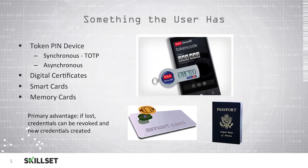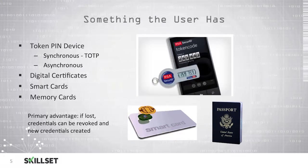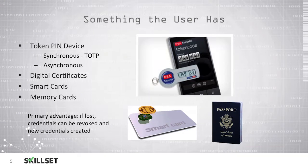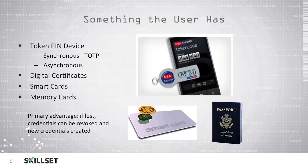Smart cards and memory cards are also ways to identify a user, as devices they can carry around with them. The main difference between a smart card and a memory card is that a smart card contains a microprocessor able to process information and perform tasks, while the memory card simply stores information. The primary advantage of the something-the-user-has authentication mechanism is that if they lose it, you can simply revoke that device and provide them with a new one, ensuring that any unauthorized individuals who find the device are not able to use it.